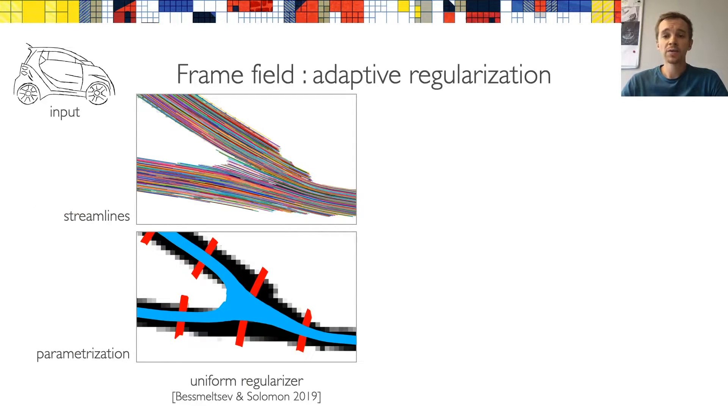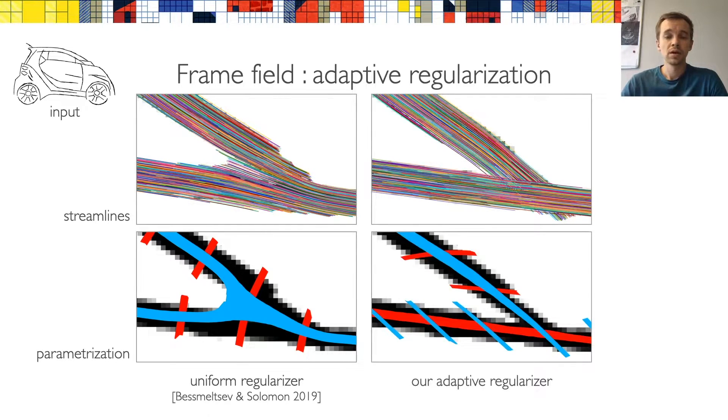However, we have found that the uniform regularization of Bessmeltsev and Solomon can sometimes lead to incorrect field topology around Y-junctions. And this is an issue for us, since our parameterization cannot just split an isoline in two. So instead, we define per-vertex weights for the regularization term, and we initialize them to zero. We then iteratively increase these weights in parts of the sketch where the frame vectors are close to being collapsed. Compared to uniform weights, we have found this strategy to improve the quality of the parameterization.